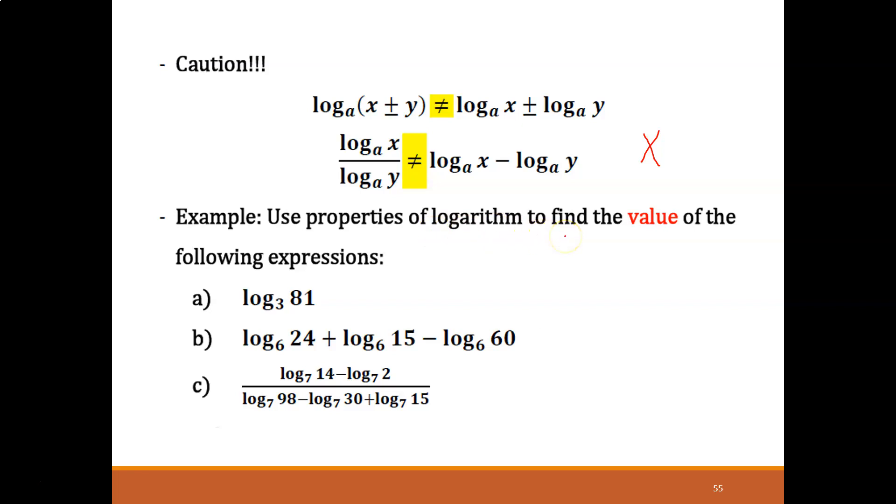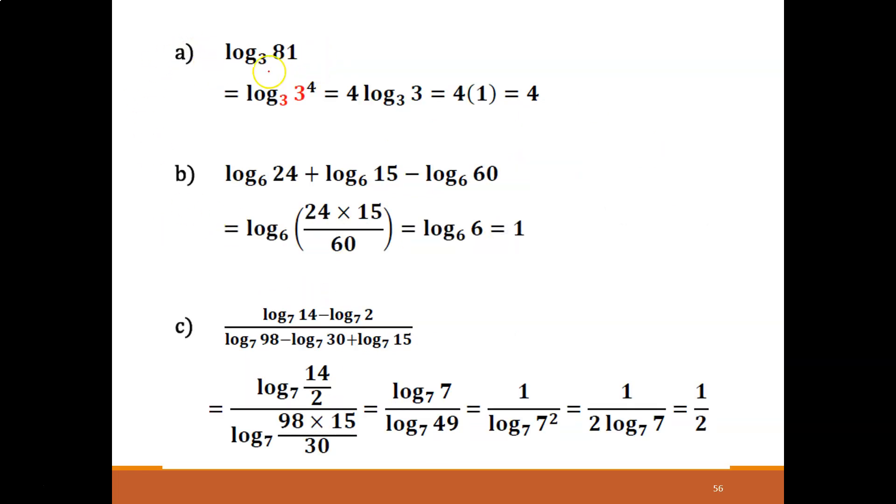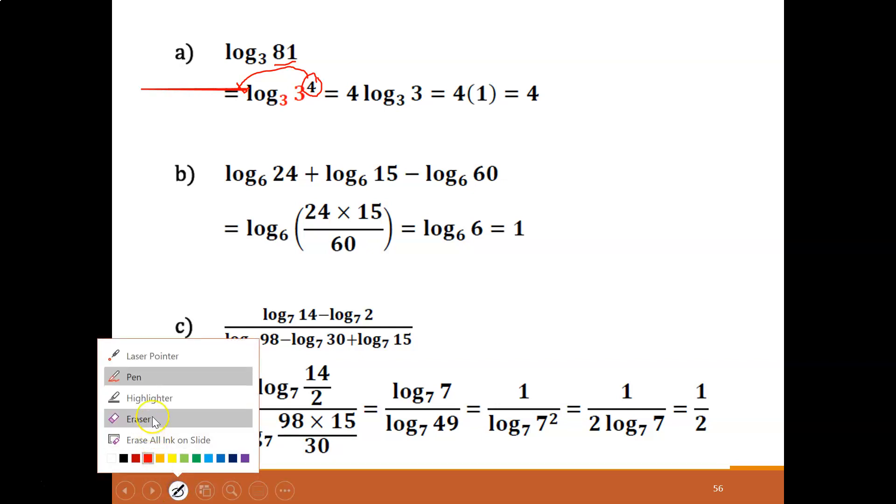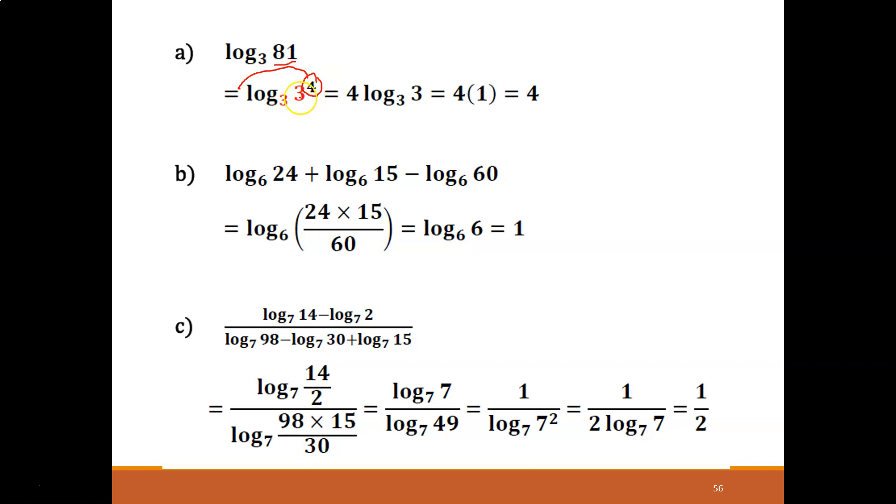Example: Use properties of logarithm to find the value of the following expression. We use the properties or laws from before. Look at log base 3 of 81. So now what happens? 81 is actually 3 to the power of 4. Since the base is the same, we can write it down like this. It has a power here, this can be brought to the front. Since we have the same base over here, 3 and 3, and we have power 4, you can bring 4 to the front. And this whole thing is actually equal to 1, log base 3 of 3 is 1, so 4 times 1 you get 4.